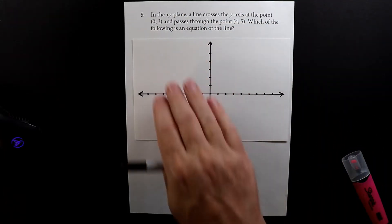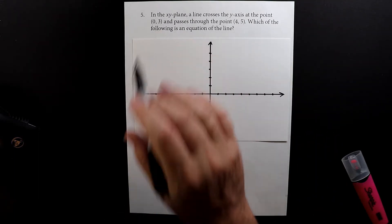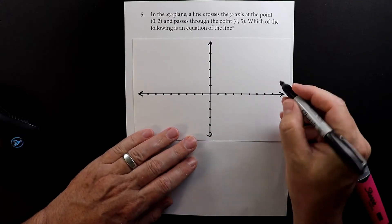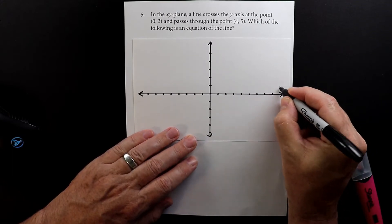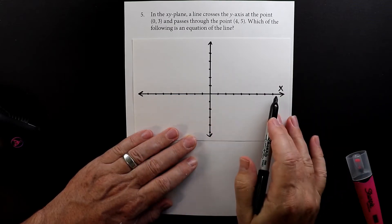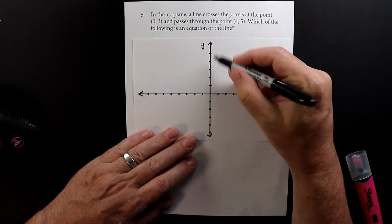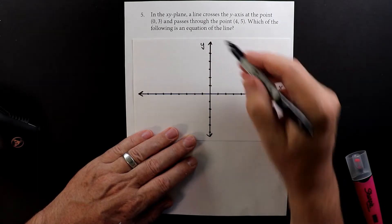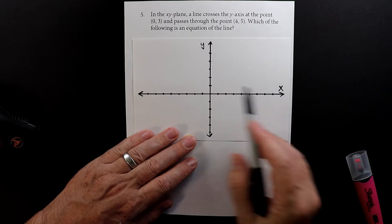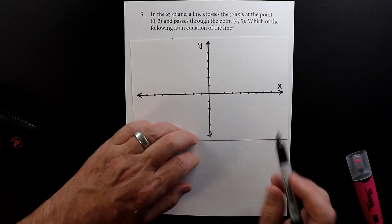This is an x and y plane. The way I remember this is x is on the ground, so your x's run across the bottom here, and then your y points up to the sky. So x on the ground, y to the sky — that's how I remember: y is up and down, x is left and right.